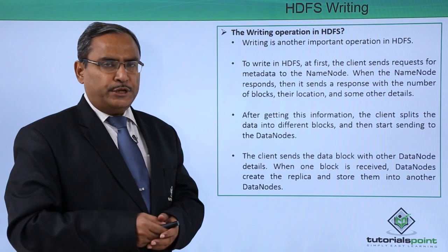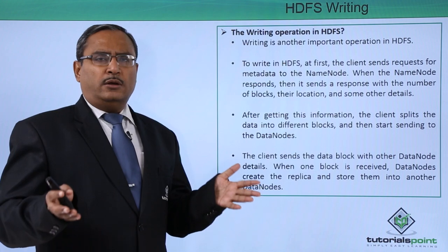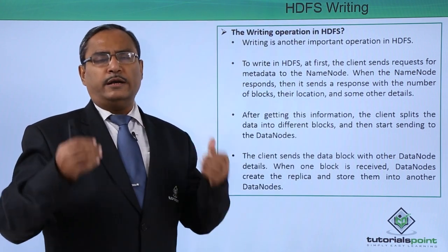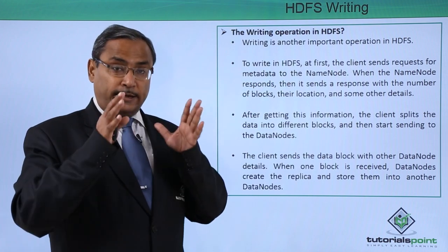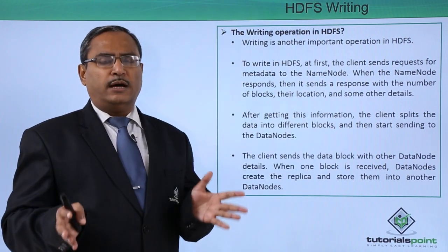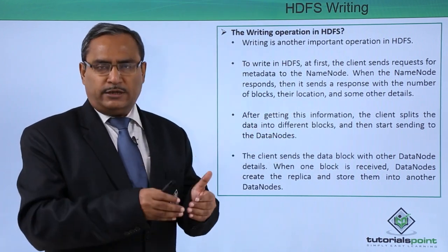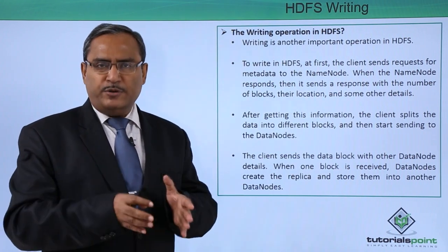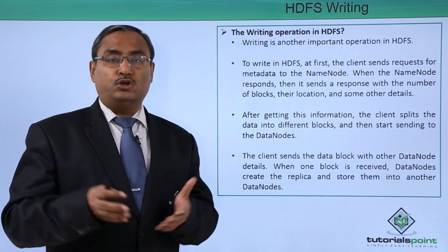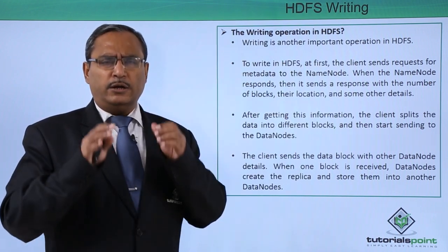Writing is an important operation in HDFS. To write in HDFS, the client first sends a request for metadata to the NameNode. In our HDFS architecture, we have only one NameNode and multiple DataNodes. The DataNodes run on commodity hardware — cheap hardware — and the NameNode is the master and manager in the system, while the DataNodes are the workers, following a master-worker architecture. The write request is sent to the NameNode so it can provide information on which DataNodes the data is to be written, how many blocks there will be, which blocks go to which DataNode, and how replication will take place. All this management is handled by the NameNode.